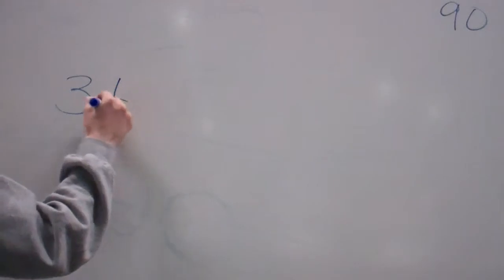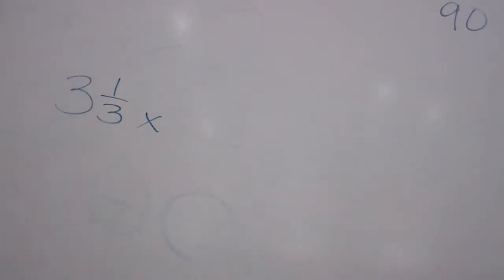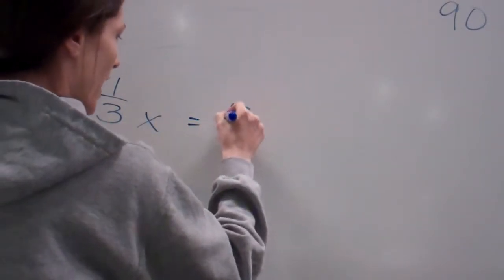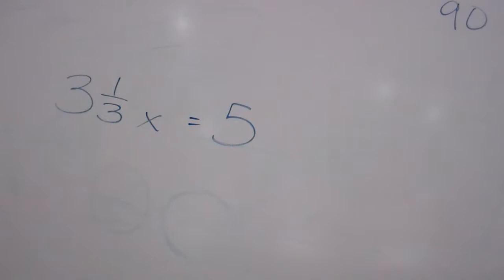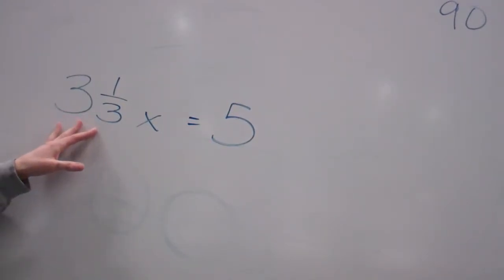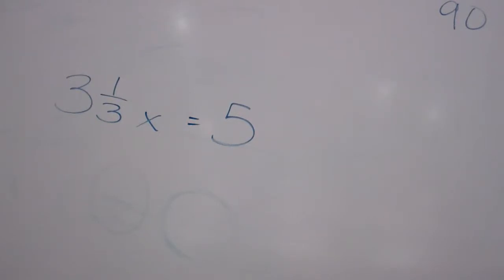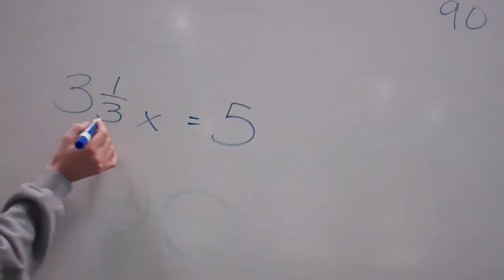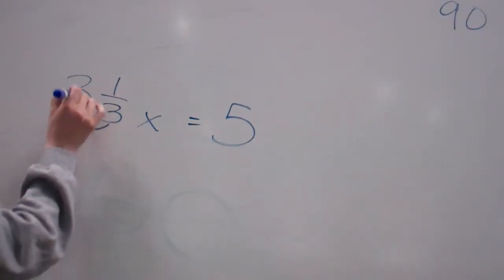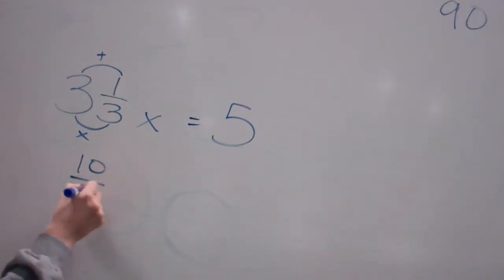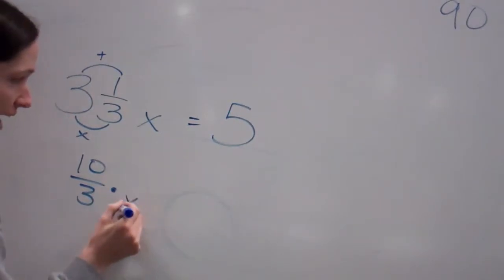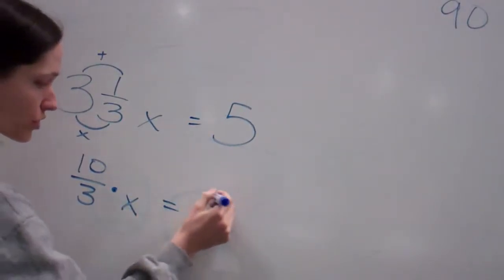Here's another one: 3 and a third x equals 5. This is a little different because it's in mixed number form. What should I do first? Make it improper. 3 times 3 is 9, 9 plus 1 is 10. So 10 thirds times x equals 5.